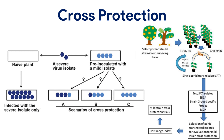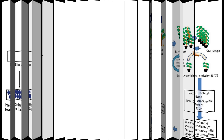Cross protection: viral cross protection in plants is known as an acquired immunity phenomenon where a mild virus strain or isolate can protect plants against economic damage caused by a severe challenge strain or isolate of the same virus.